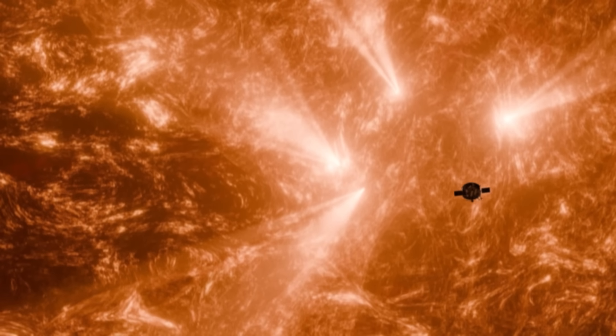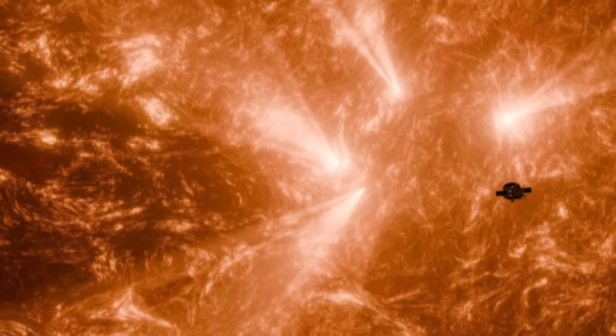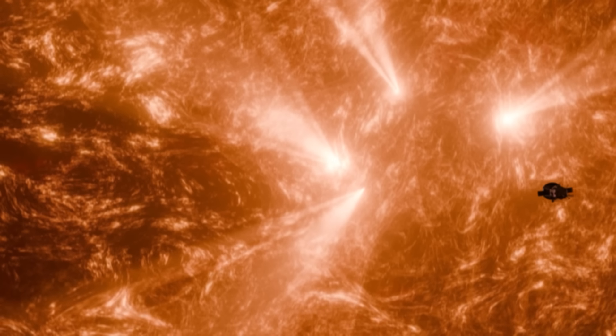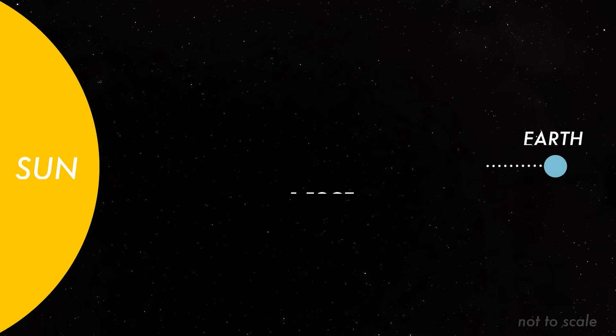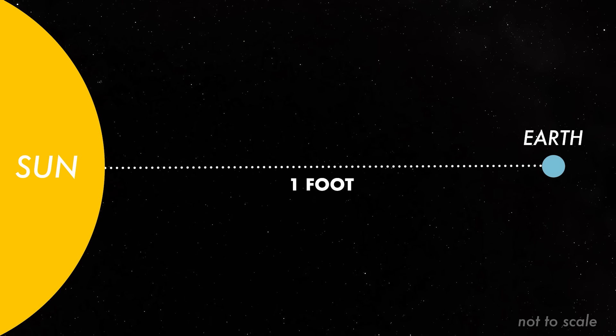Even more impressively, it flew just 3.8 million miles from the Sun's surface, a distance so small that if Earth and the Sun were a foot apart, Parker would have gotten within a half inch of the star.